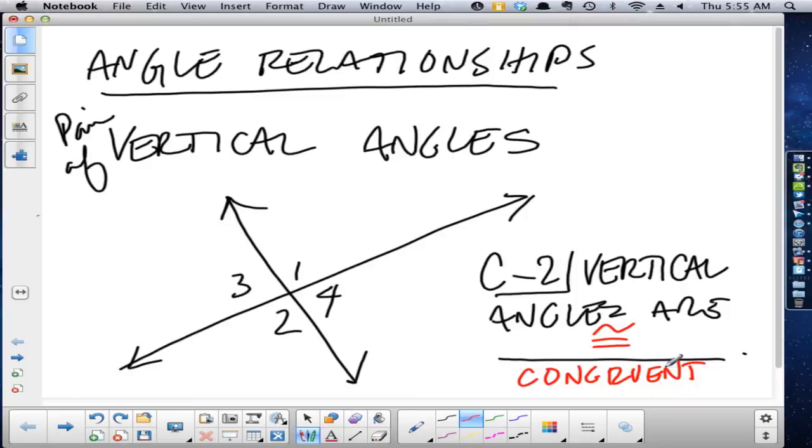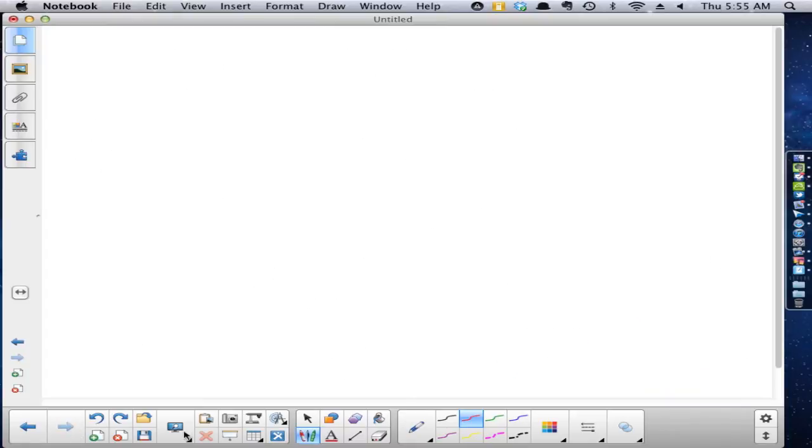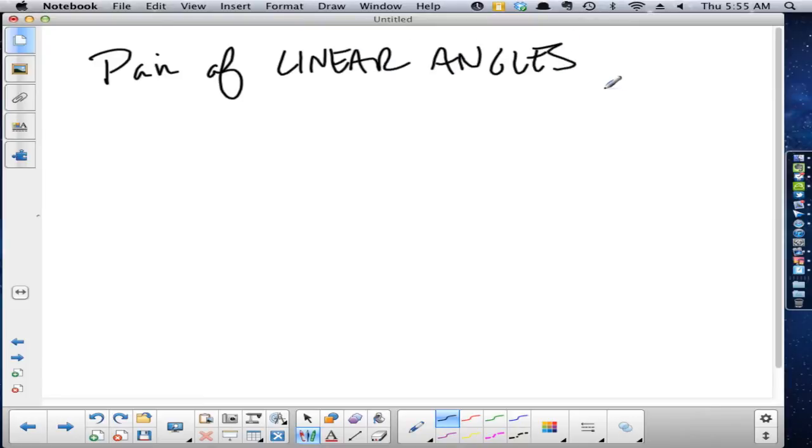I have to do the next conjecture, and that would be a conjecture regarding a pair of linear angles. There's that squeaking again, it's almost like we're on a chalkboard way back when. So a pair of linear angles are formed. I know a lot of your definitions were weird, or not weird, not what I'm used to.